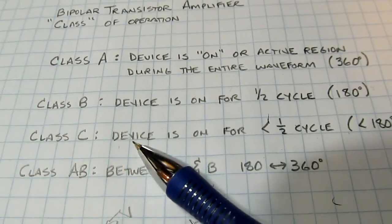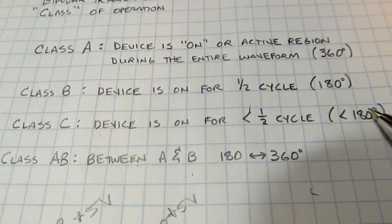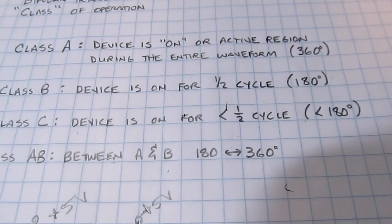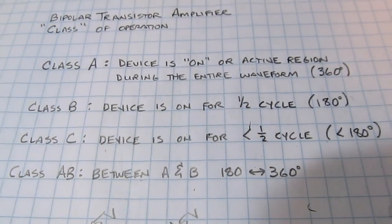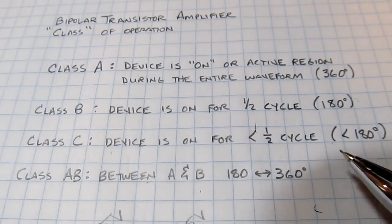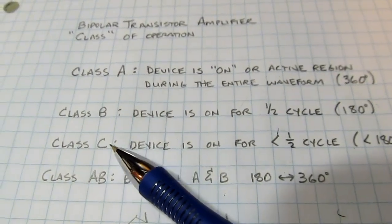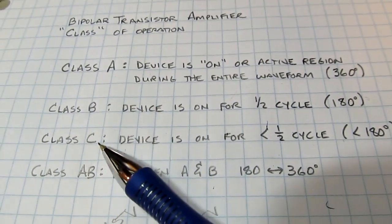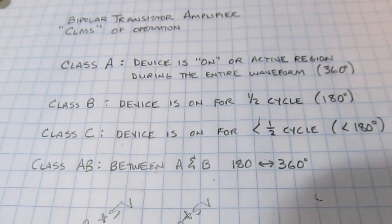Taking that to a little bit more of an extreme, you can go to class C. Class C is when the device is on for less than a half a cycle, less than 180 degrees. So more efficient yet, a lot more distortion, but again, you might be able to filter it out to make that amplifier work for you and be a bit more efficient. This is often the way that many single transistor RF amplifiers work because they'll take an operating class C and just filter the output to get rid of all that harmonic distortion.